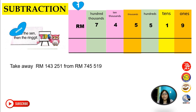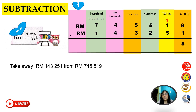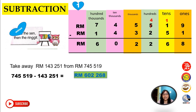Take away RM143,251 from RM745,519. Write the bigger number first by place value: 9 at ones, 1 at tens, 5 at hundreds, 5 at thousands, 4 at ten thousands, 7 at hundred thousands, symbol RM. Subtract: 9 minus 1 is 8. 1 cannot minus 5 — borrow from hundreds, so 11 minus 5 is 6. 4 minus 2 is 2. 5 minus 3 is 2. 4 minus 4 is 0. 7 minus 1 is 6. The answer is RM602,268.